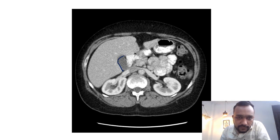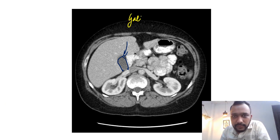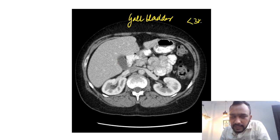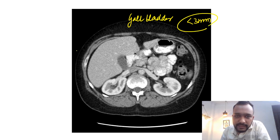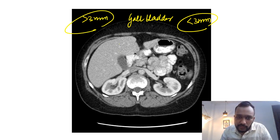If we go down a few sections lower, we can see the gallbladder as well. I would like you to appreciate the wall thickness of the gallbladder. You will see that the wall thickness is negligible — it is less than 3 mm. I'm going to show you one case in which the wall thickness will be more than 3 mm.